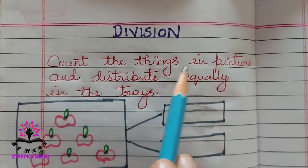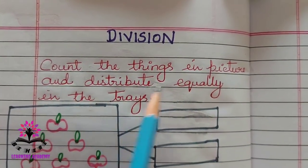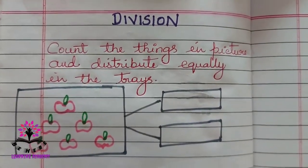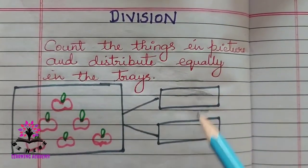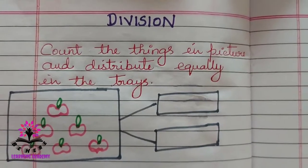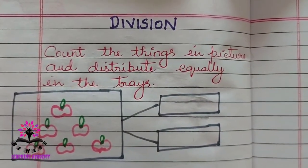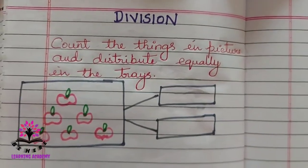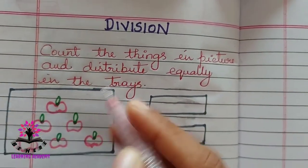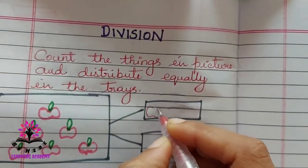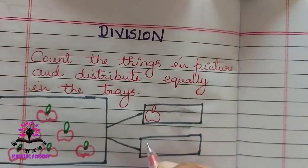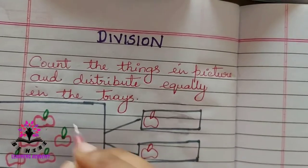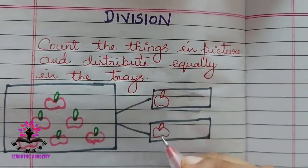Count the things in the picture and distribute equally in the trays. You see here there are six apples, isn't it? Six apples — you have to distribute them in two trays. How will you distribute? First, put one apple here and one here. Two are over. Total there are six, and now you have distributed two.